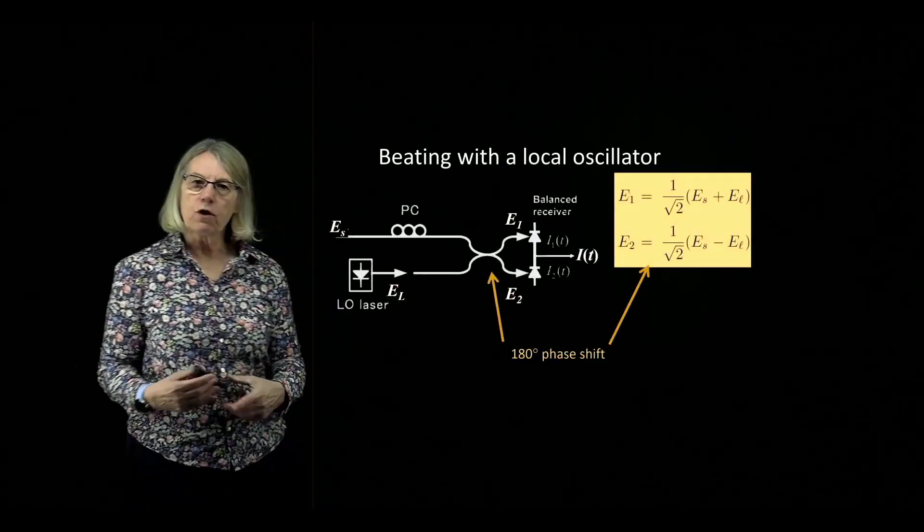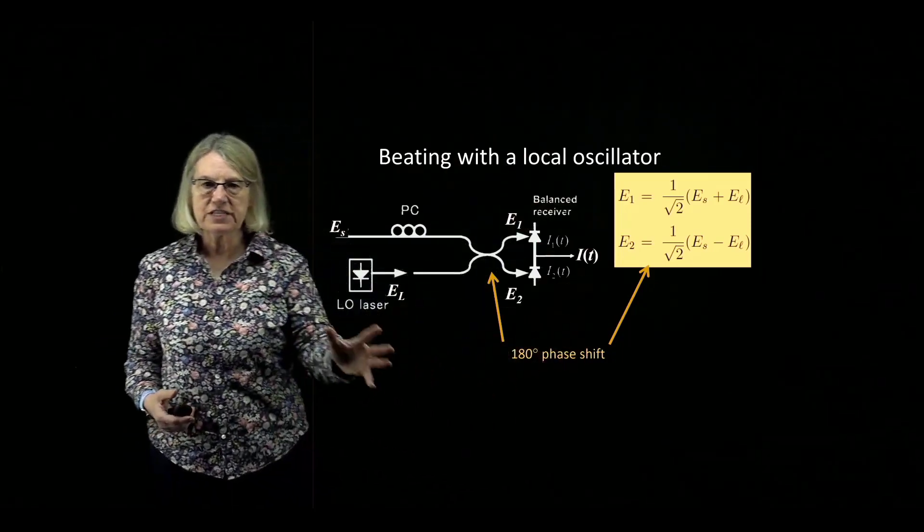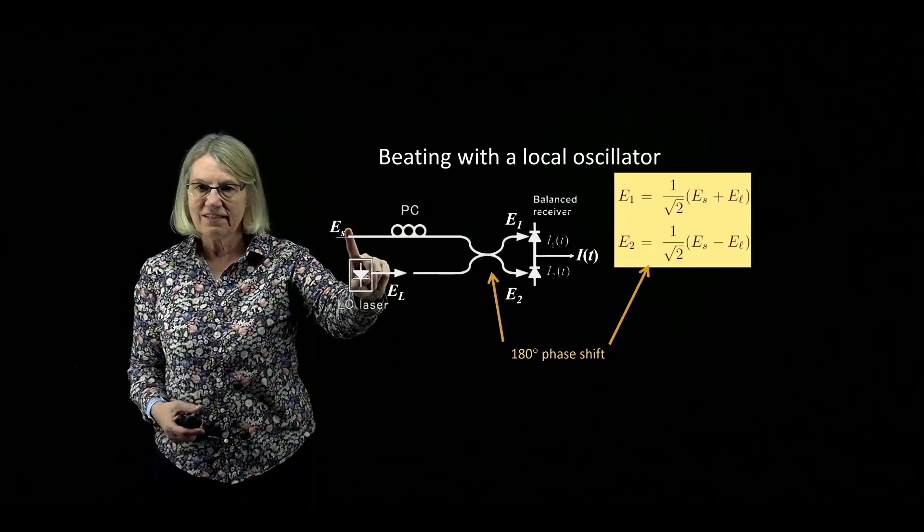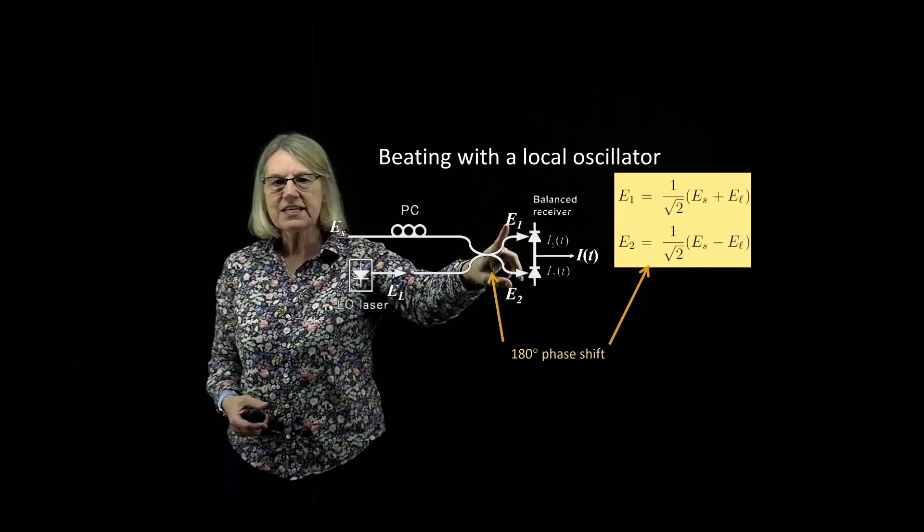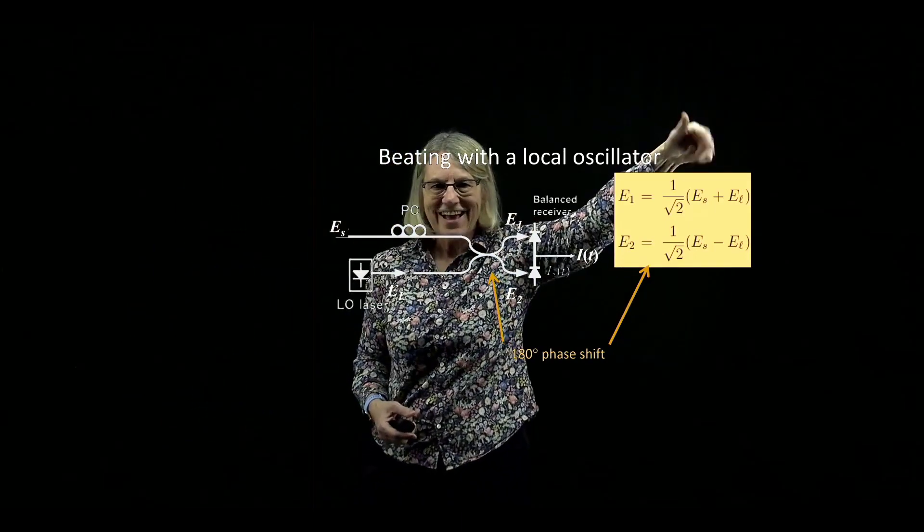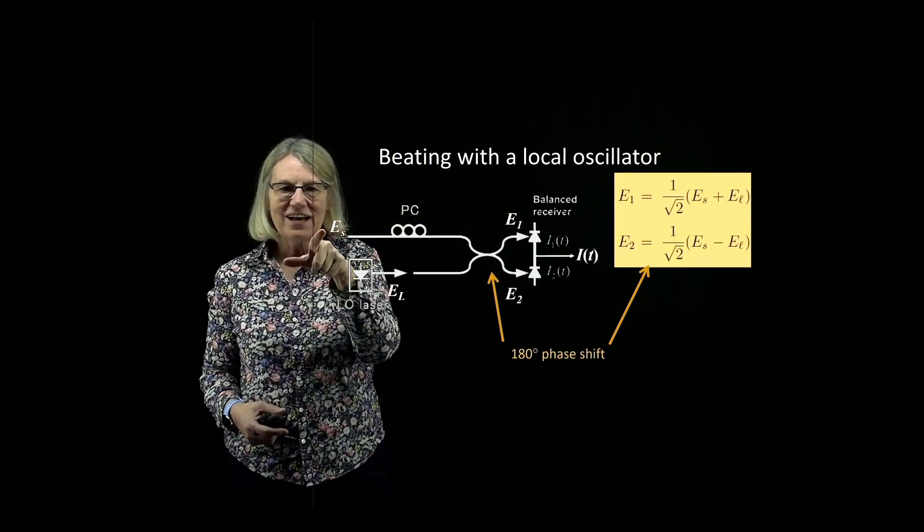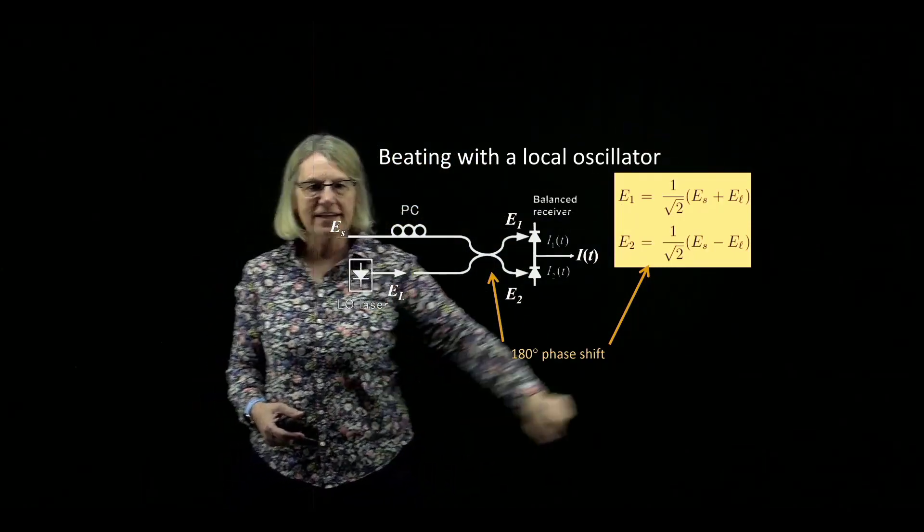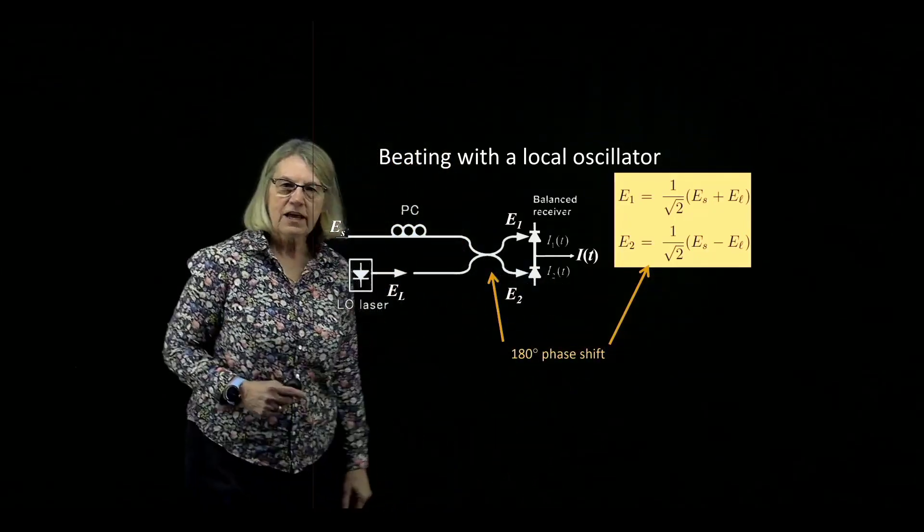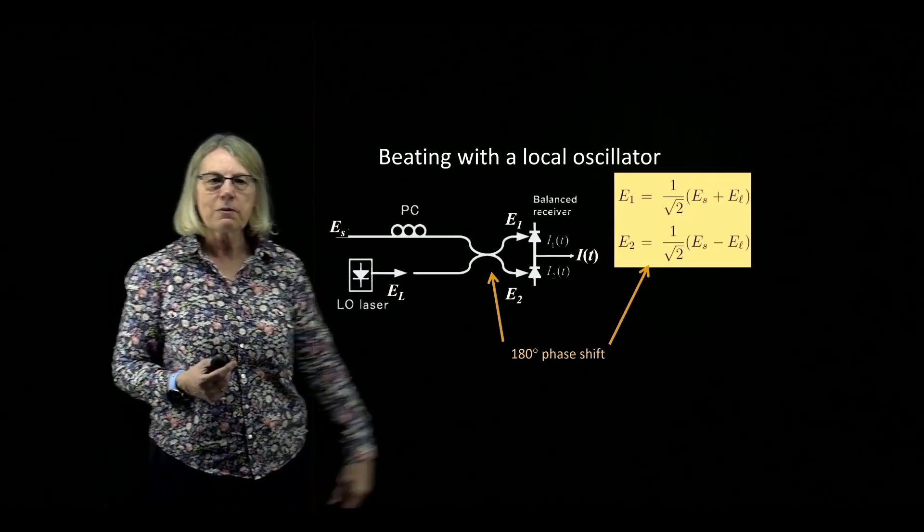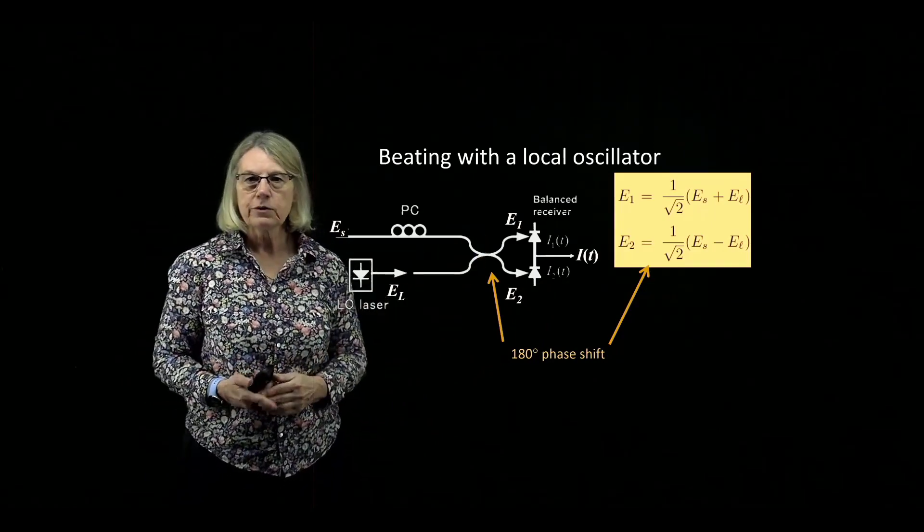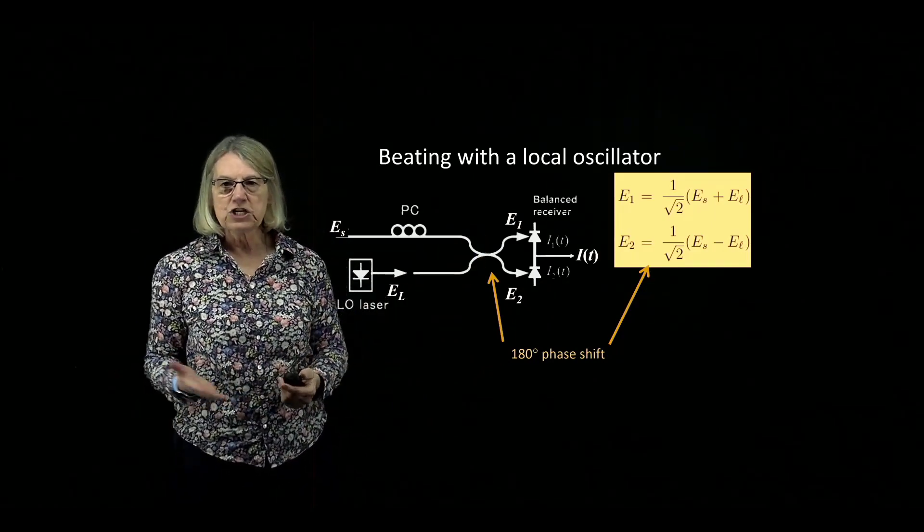I've shown you before this structure for the coherent receiver. I highlighted that this local oscillator is beating against the signal. Because of this beating, what we see at this first photodetector is the sum of the data signal and the local oscillator. And what we see in the lower photodiode is an electric field which is proportional to the difference between the two. This is where we're taking advantage of the phase shift which occurs in the 3dB 2x2 coupler.